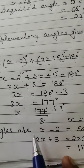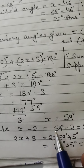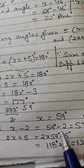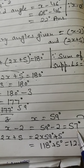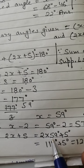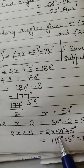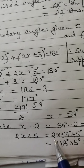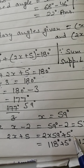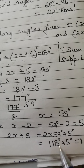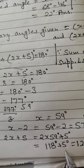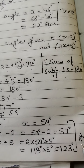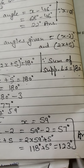So the angles are: first angle x minus 2, substituting x equals 59: 59 minus 2 equals 57 degrees. Second angle 2x plus 5: 2 multiplied by 59 plus 5 equals 118 plus 5 equals 123 degrees. Answer: 57 degrees and 123 degrees.